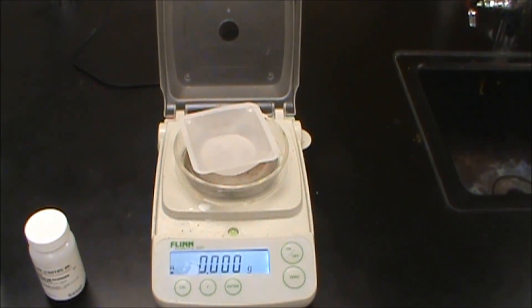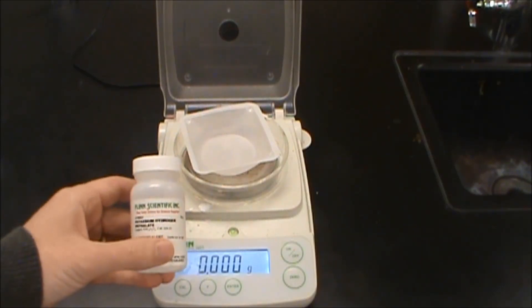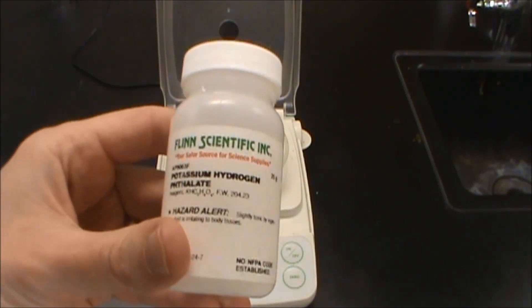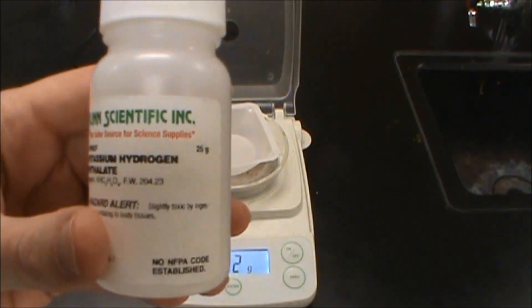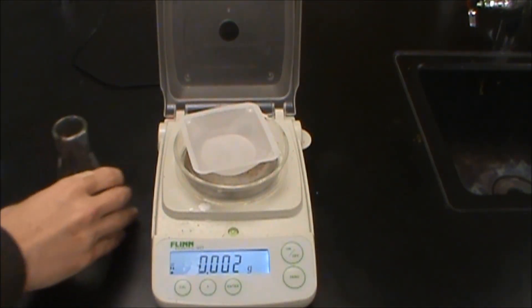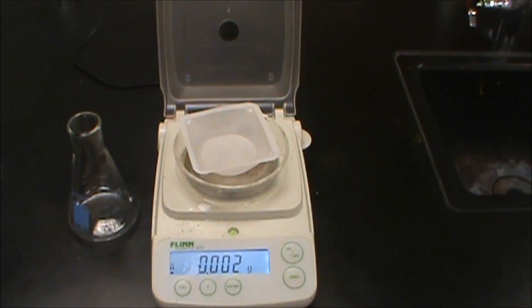Here we're going to do a standardization titration. We're going to use potassium hydrogen phthalate, which has a molar mass of 204.23 grams per mole. And what we're going to do is really simply we're going to put that in some distilled water to figure out the concentration of a sodium hydroxide solution using titration.